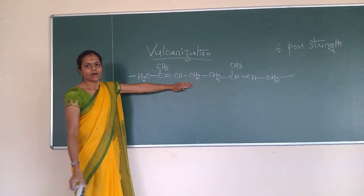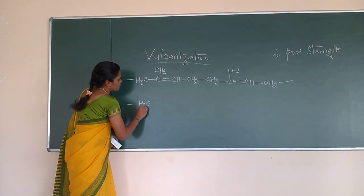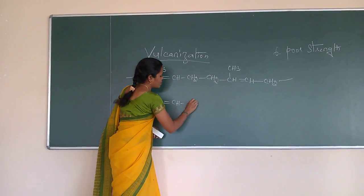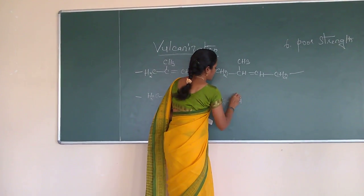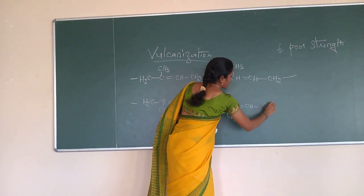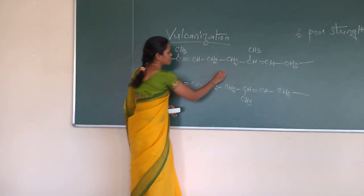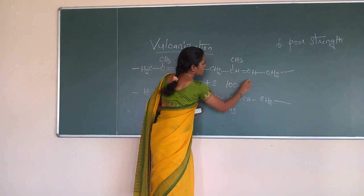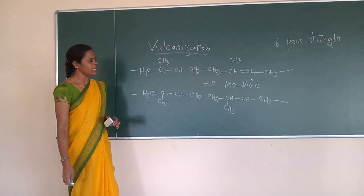So this is one cycle of polyisoprene. I will take as a cycle also. Now I will add sulfur with it. At this temperature, 100 to 140 degree centigrade. I am applying some heat that is 100 to 140 degree centigrade.